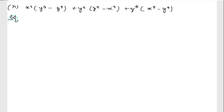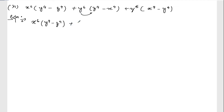Solution. The first step is to multiply. Keep x to the power 6 into y to the power 4 minus z to the power 4 as it is. Then multiply: y to the power 6 into z to the power 4, minus y to the power 6 into x to the power 4, plus z to the power 6 into x to the power 4.